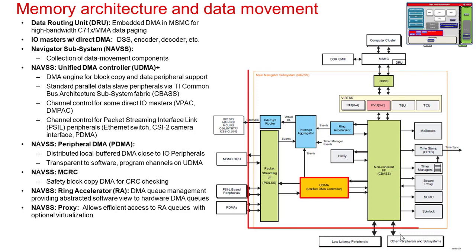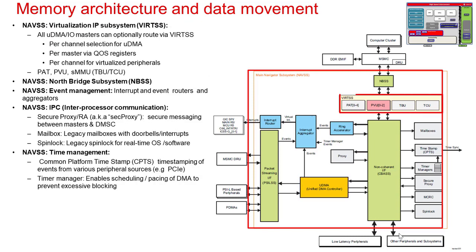The UDMAs are located in what is called the Navigator Subsystem, or NAVSS. The Navigator is really a collection of all IPs dealing with data movement, message movement, and event management. The Navigator also contains all the virtualization components, which will be covered in a subsequent section.